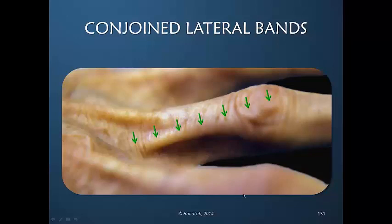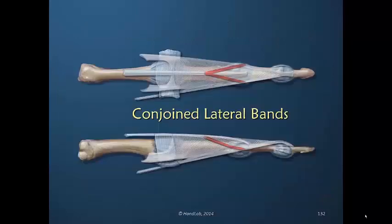Isn't it wonderful to look at the skin and actually see the anatomy underneath and see how it's being activated? The conjoined lateral bands go in the opposite direction — a force of the extensor digitorum communis, before it reaches the central slip insertion, provides shared tension to the conjoined lateral band, transferring tension to the lateral band more distally. The interconnection goes both directions.